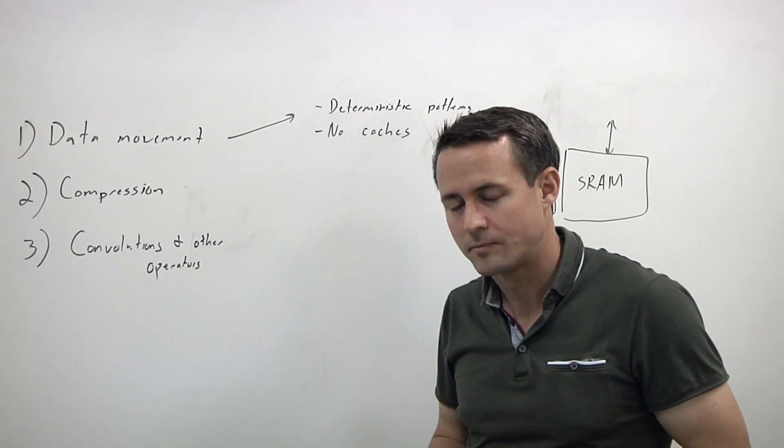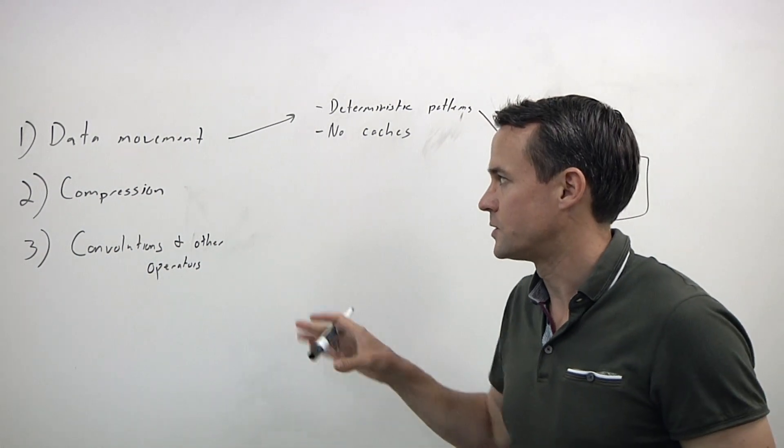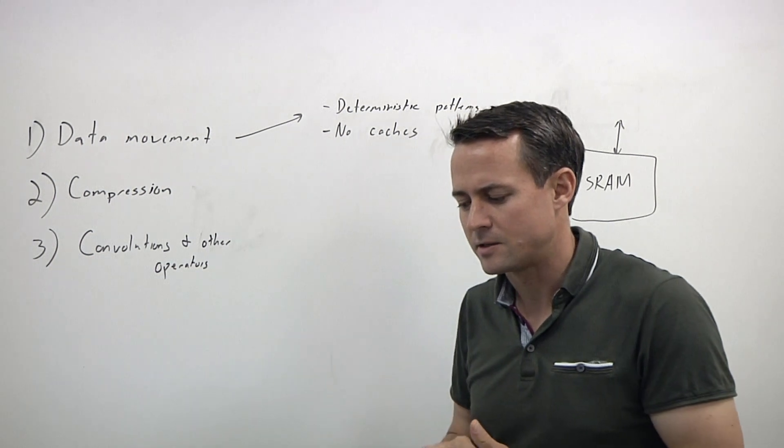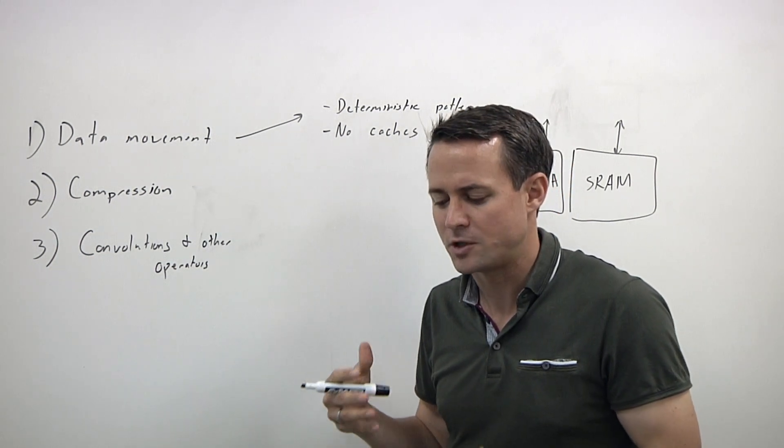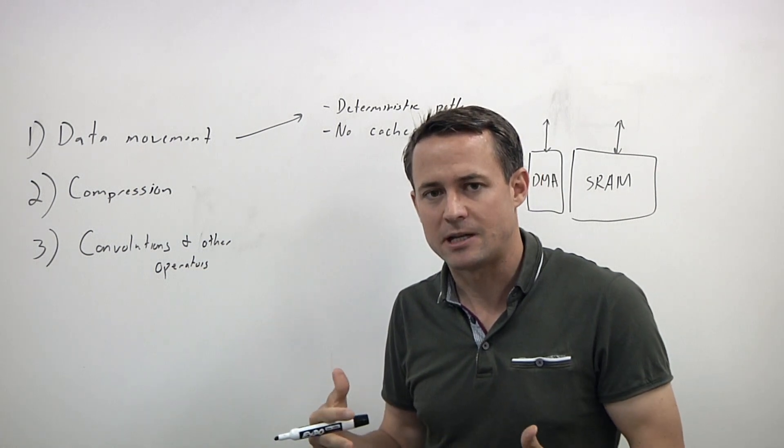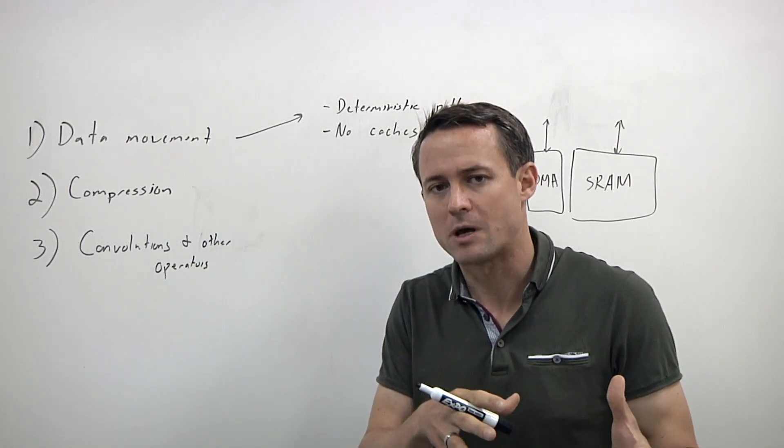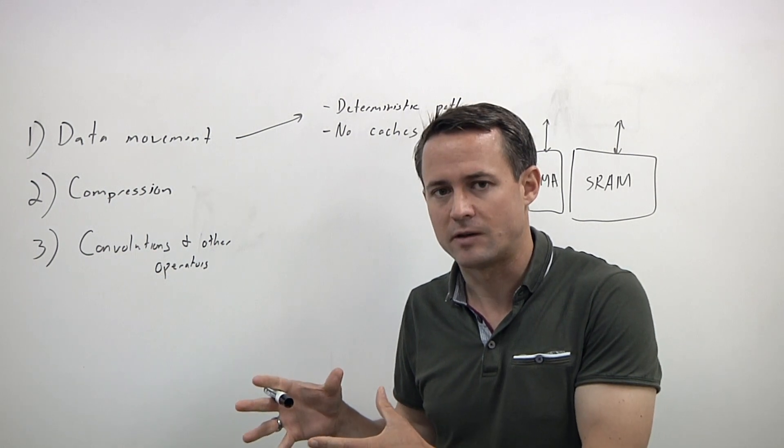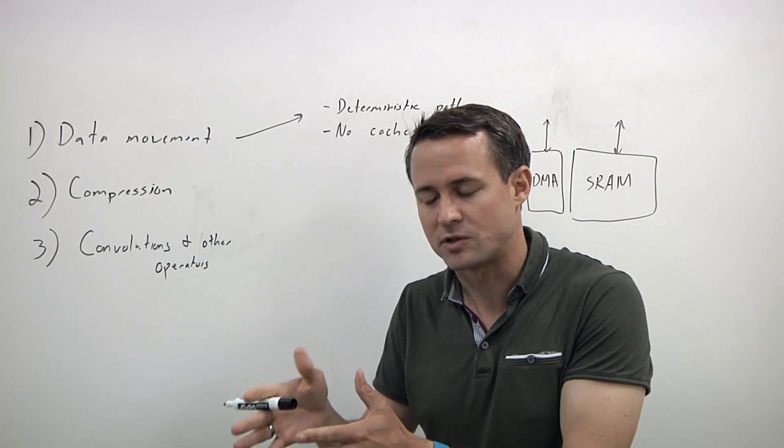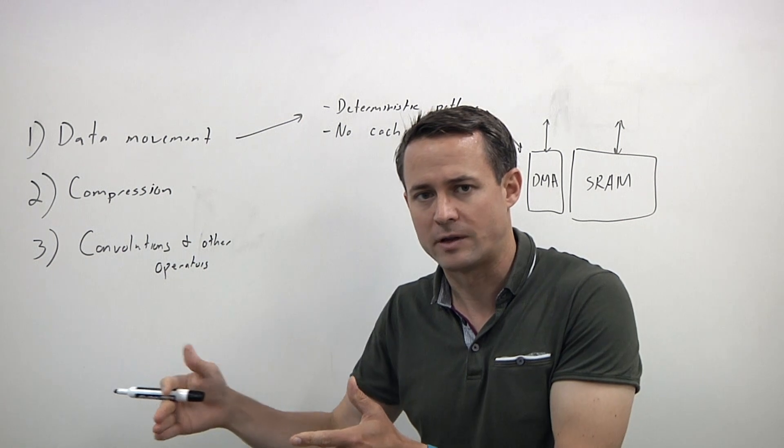Compression is one piece of this. How does that fit into this? This is particularly interesting. I talked about the deterministic data movement. Something that's also interesting about machine learning inference workloads is the type of dynamic data patterns that you see in the weights - the neural network models - and the activations. The activations are the input image and then the results of processing that image through multiple layers of the neural network.